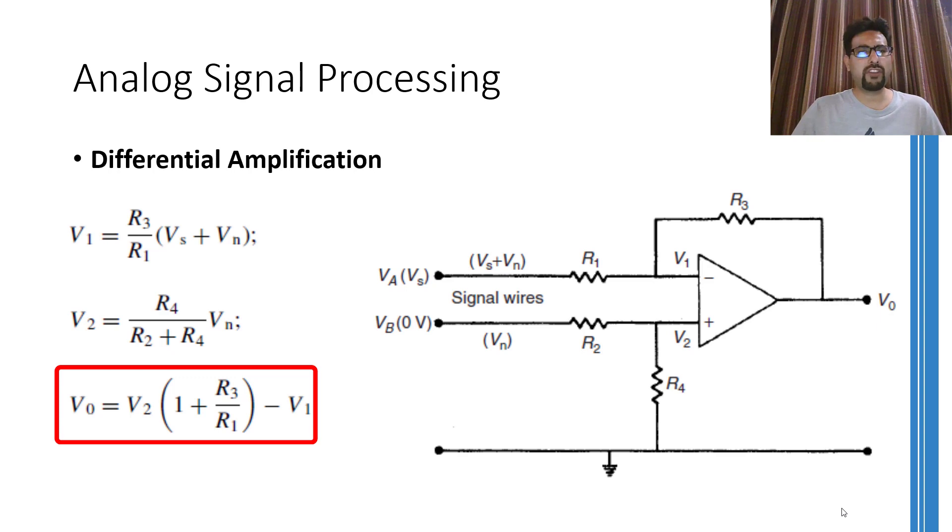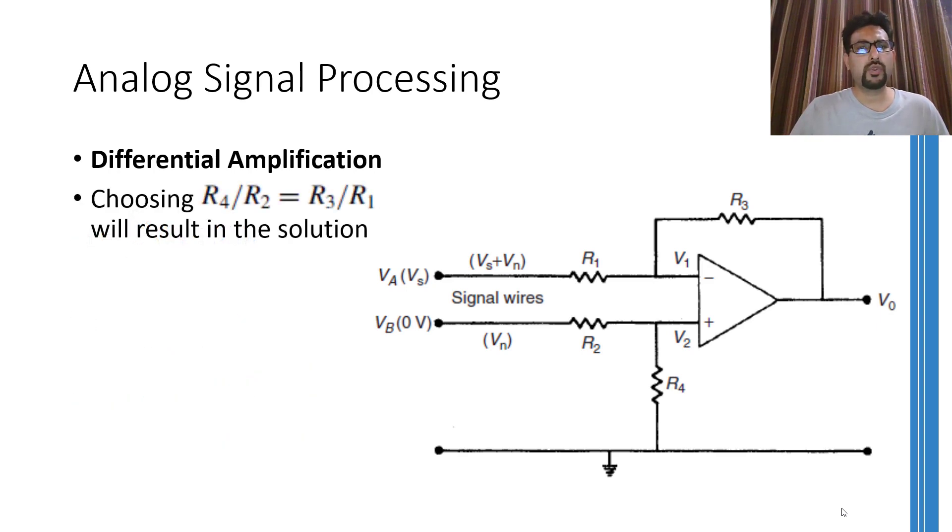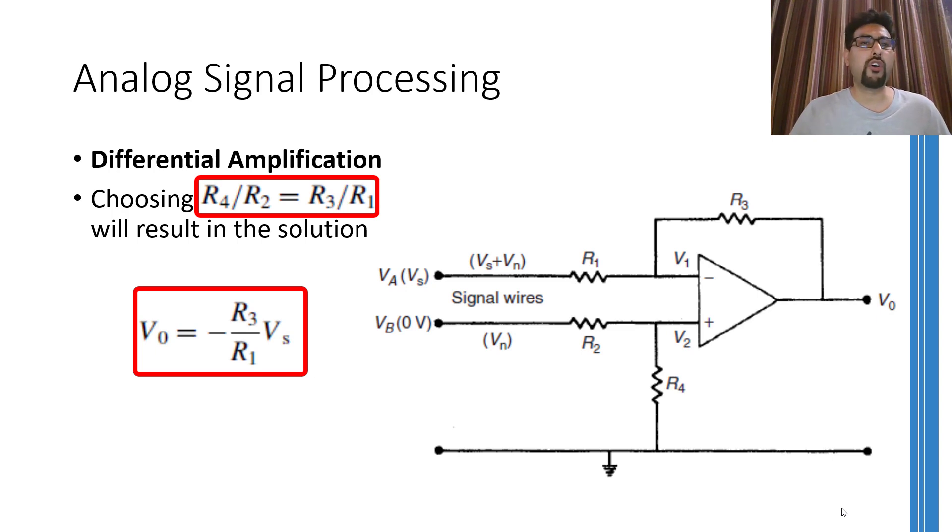So the voltages V1 and V2 are represented by these equations. Whereas, the output voltage is represented by this equation. A bit of simplification will bring us to this result, provided you have used these values of the resistances. As one of the incoming voltage was 0, in the final equation, Vb is not present. Another thing to notice is that the output voltage has been inverted. That is, it has a different sign than the input voltage Vs.